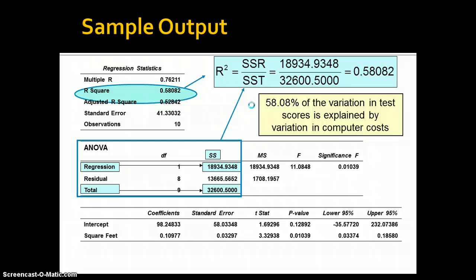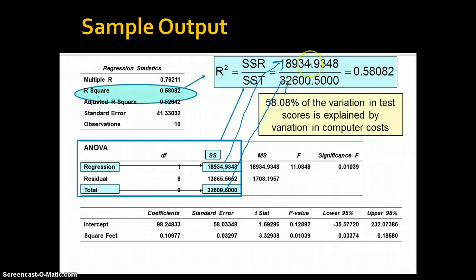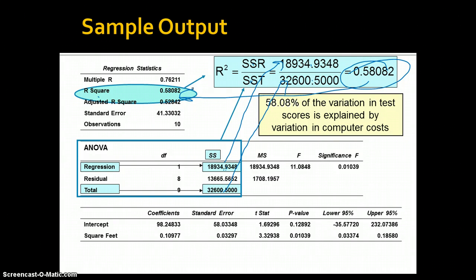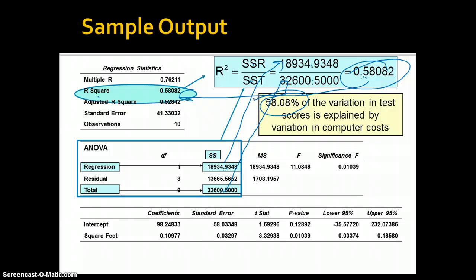When we look at our SPSS output, we get an r squared value. Our ANOVA output shows the different sum of squares components. The sum of squares regression and sum of squares total are right there. Dividing sum of squares regression by sum of squares total gives you the r squared — the same value reported in the model summary. This means 58.8% of the variation in test scores is explained by variation in computer costs, which is more than half. Not bad, actually.